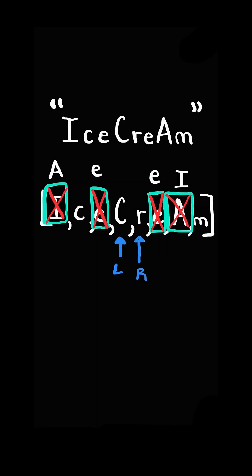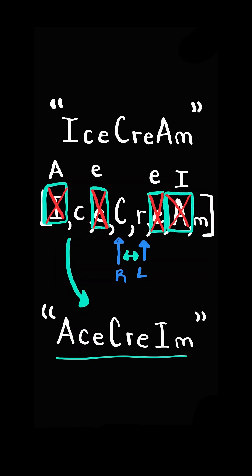Now both pointers do not point to a vowel. So we advance both pointers. If L and R cross each other, we stop the algorithm, and join the elements in the list together, and return the string.